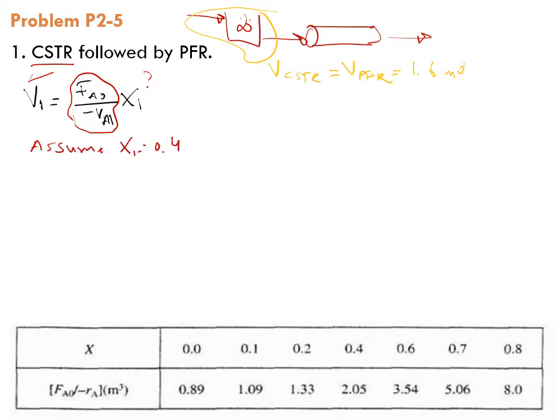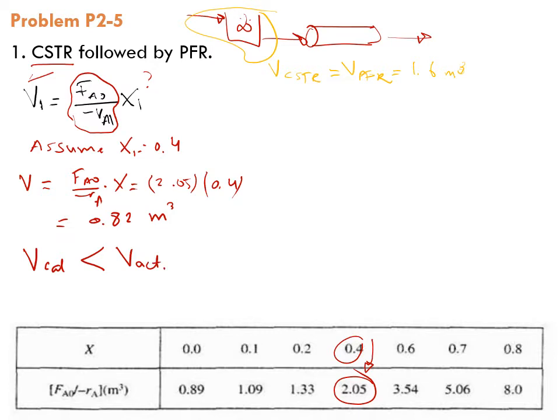Let's assume X_1 equals 0.4. V equals F_A0 over minus r_A times X, and X is 0.4, so that means F_A0 over minus r_A is 2.05, and the answer is 0.82 cubic meters. Let's compare: V_calculated is less than V_actual.